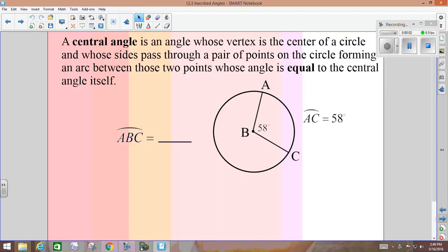We're covering central and inscribed angles today. Central angles should be old news. At the top there, a central angle is an angle whose vertex is at the center of the circle, and then the sides pass through a pair of points on the circle forming an arc between the two points. The sides are two radii. The arc is always equivalent to your central angle. So in your little picture there, central angle ABC is 58 degrees, so we say the measurement of arc AC is 58 degrees. Central angles equal their arcs.